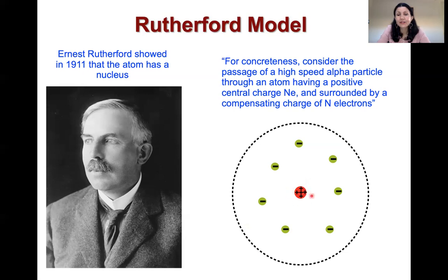And the nucleus was thought to contain the positive charge, and then all around were these negative charges, which were the electrons. So it's starting to look like the atom that we know today.